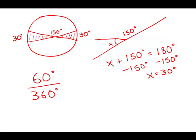Well, of course a circle is 360 degrees, and 60 divided by 360 equals 6 divided by 36 equals 1 over 6. The shaded region is 1/6 of the whole circle, and that is answer choice C.